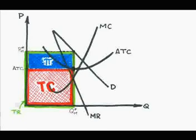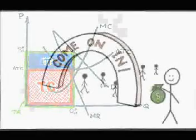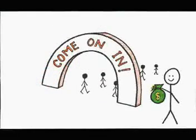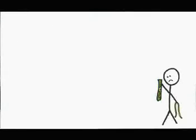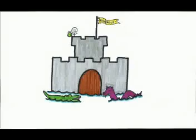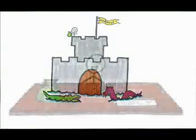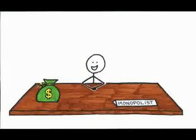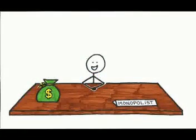What happens to the monopolist's profit in the long run? If a competitive firm makes a profit in the short run, other firms enter and profits go to zero. But for the monopolist, nothing happens. Remember the barriers to entry? Those barriers keep competitors out, protecting the monopolist's profit.